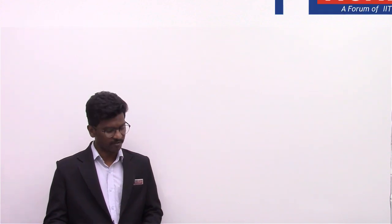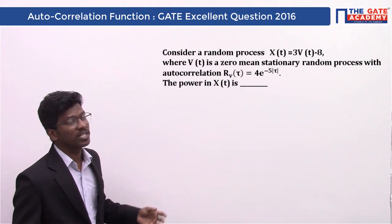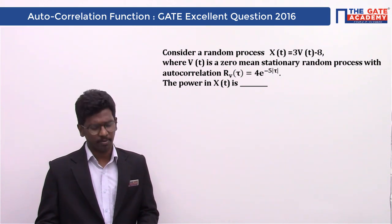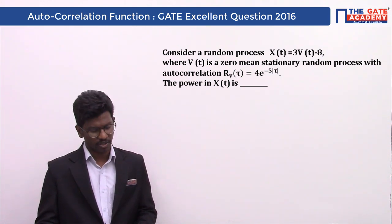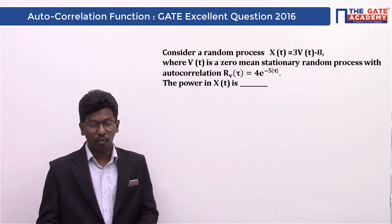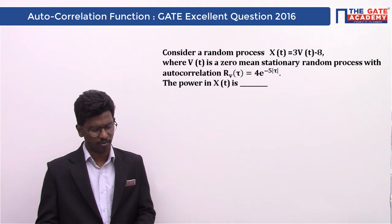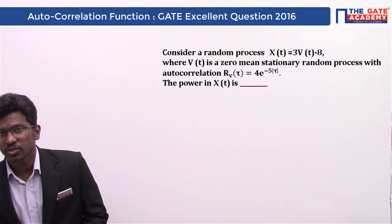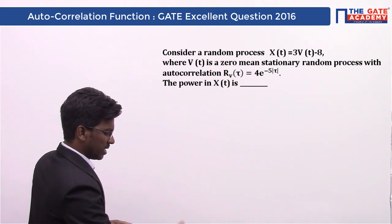Hello students, today we are going to discuss a question from the subject communication. This question belongs to the chapter random process noise, from the topic of autocorrelation function. You can see the question on the screen. The question is: consider a random process x(t) = 3·v(t) - 8, where v(t) is a zero mean stationary random process with autocorrelation Rv(τ) = 4·e^(-5|τ|). The power of x(t) is? This question belongs to the year 2016.